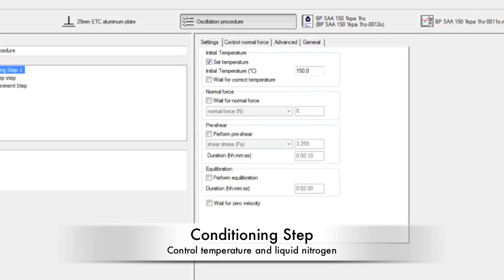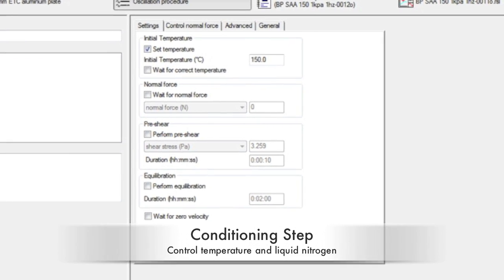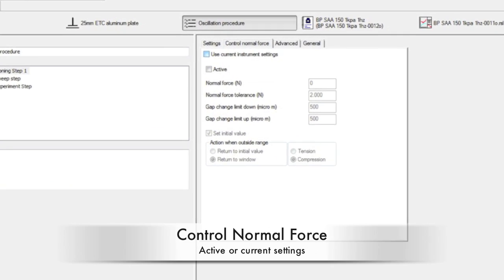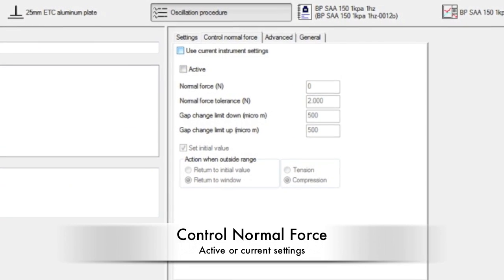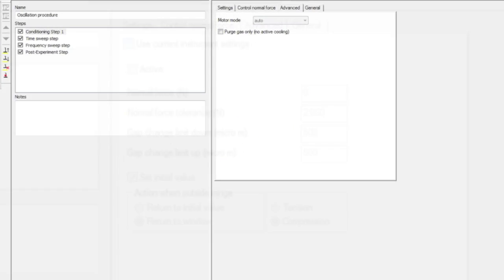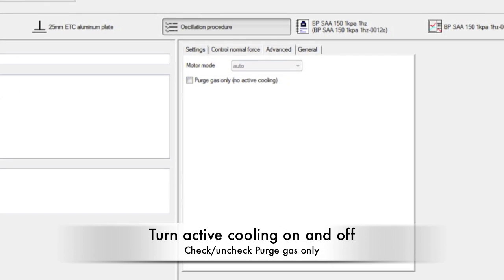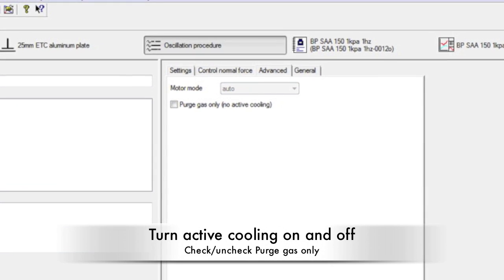Click on the Conditioning step to establish temperature and liquid nitrogen controls. In the settings tab, set the test temperature. The control normal force which controls the stress induced can be checked as active or the current settings can be used. Turn the liquid nitrogen on or off under the Advanced tab by checking or unchecking the Purge Gas Only No Active Cooling box.